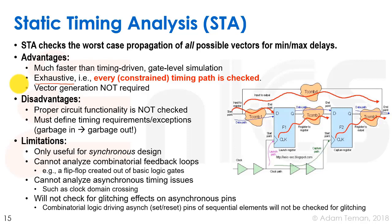Some limitations of static timing analysis: it's only useful for synchronous design — if we're using asynchronous design, it doesn't know how to deal with it. It doesn't know how to do things like clock domain crossing. It cannot analyze combinational feedback loops. So if we have something like a flip-flop made out of basic gates or a ring oscillator — any feedback that doesn't go through a sequential element — it won't work and you'll get warnings and errors from your synthesis tool or timing checker.